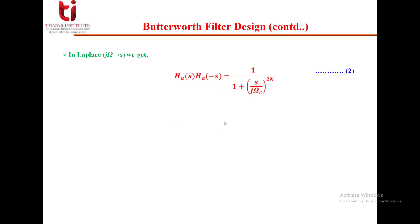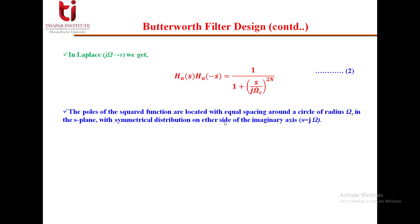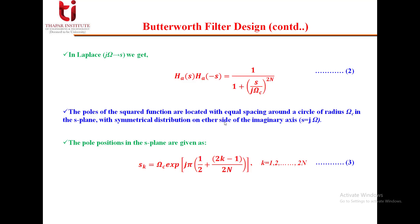We need to calculate H_A(S), which is the function in the Laplace domain — here j·ω is replaced by S. The poles of this squared function are located with equal spacing around a circle of radius ω_c in the S-plane, with symmetrical distribution on either side of the imaginary axis. The pole positions are given by equation number 3: S_k = ω_c · exp(j·π · (1/2 + (2k−1)/(2n))), where k runs from 1 to 2N and N is the order of the filter.